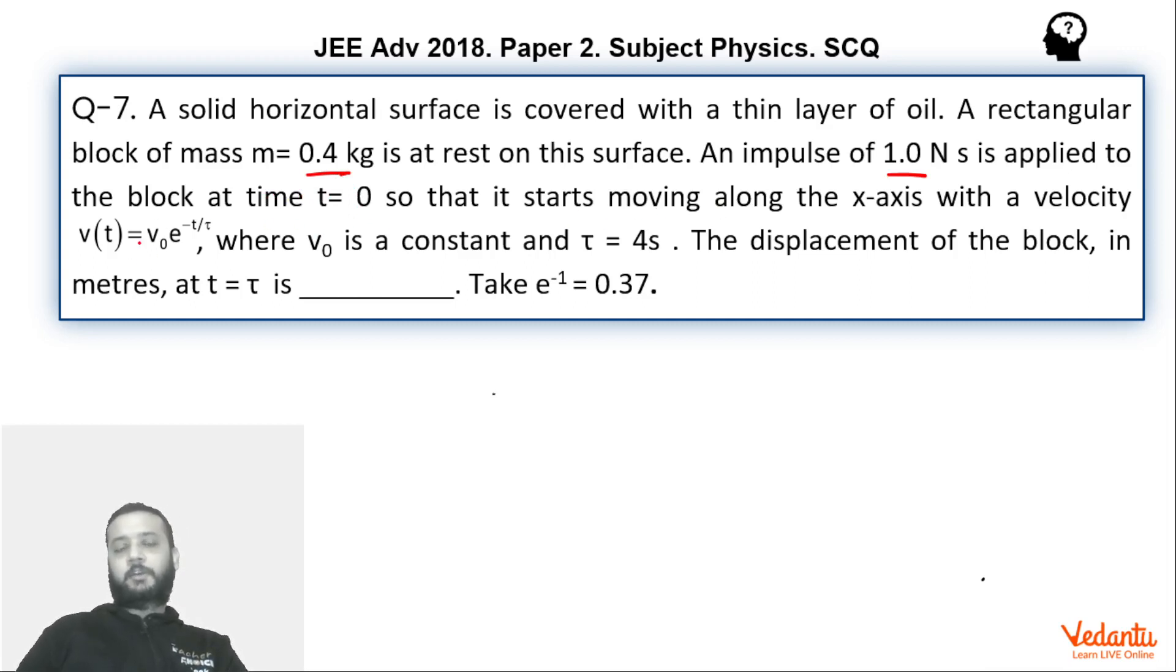The velocity varies according to this function v0 times e to the power minus t by tau where v0 is a constant. And tau is given as 4 seconds. The displacement of the block at t equals tau is what we have to find. Basically we have to find the displacement of the block at t equals 4 seconds and it has been given e to the power minus 1 as 0.37.